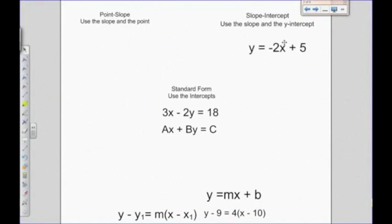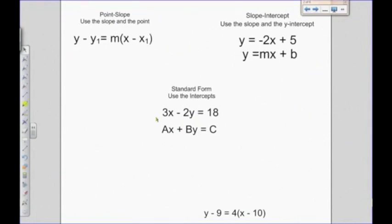Whenever I have y equals, that's called slope intercept. And y minus y one equals m x minus x one is called point slope because they give you a point and a slope.